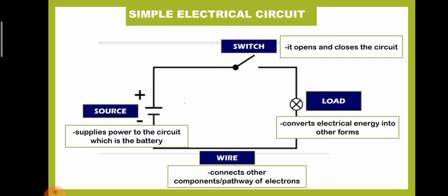A simple electrical circuit is composed of the following parts. Switch, which opens and closes the circuit. Load, which converts electrical energy into other forms. In our illustration, the load is a bulb, so electrical energy is converted to light energy.